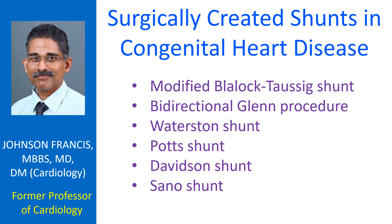In the classic Glenn procedure, it is an end-to-end anastomosis of the superior vena cava to the right pulmonary artery, so that the superior vena cava venous blood does not reach the left pulmonary artery.